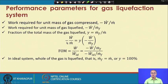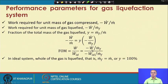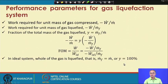The work per unit mass of gas compressed equals the product of yield and work per unit mass of gas liquefied. The net work is negative because it must be given to the system — in thermodynamics, work done on the system is negative, and work produced by the system is positive. Turbine work is positive since the turbine produces work. The figure of merit compares actual work needed to ideal work per unit mass of gas liquefied. In the ideal system, all gas is liquefied meaning mf equals m-dot and yield becomes 100%, though this is never achieved in practice.